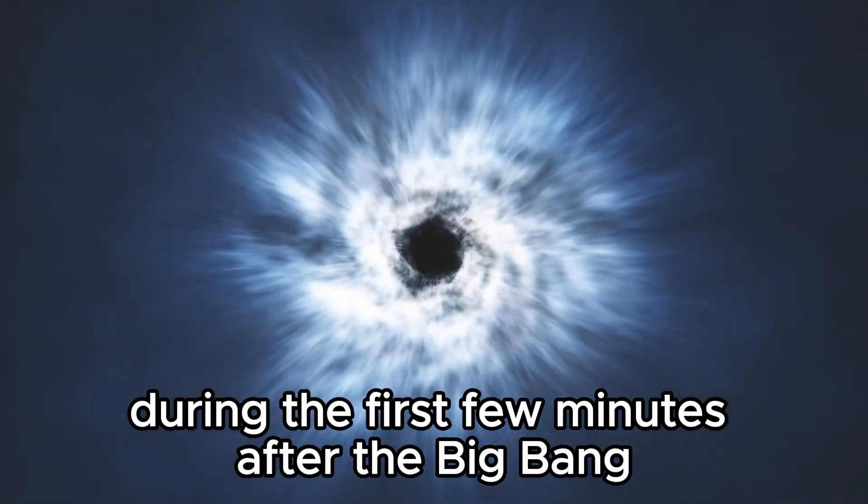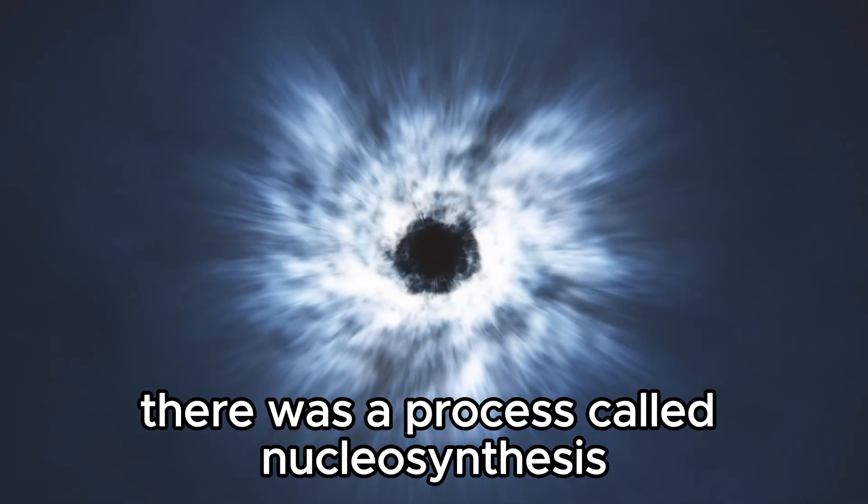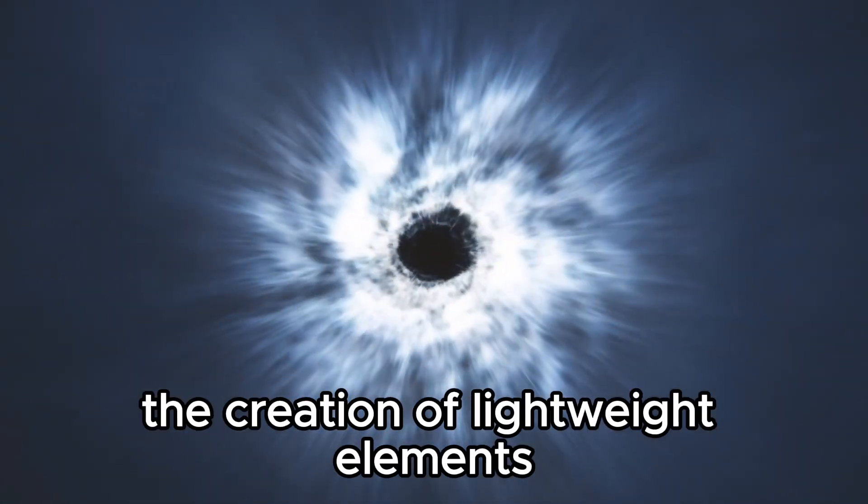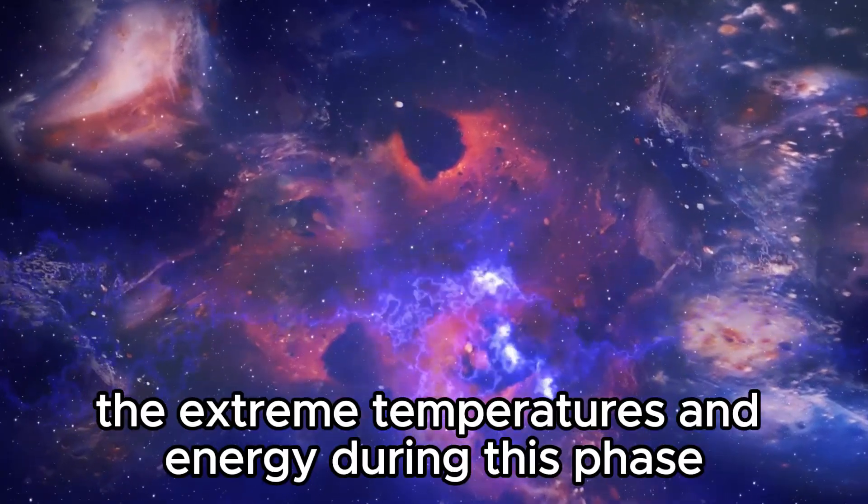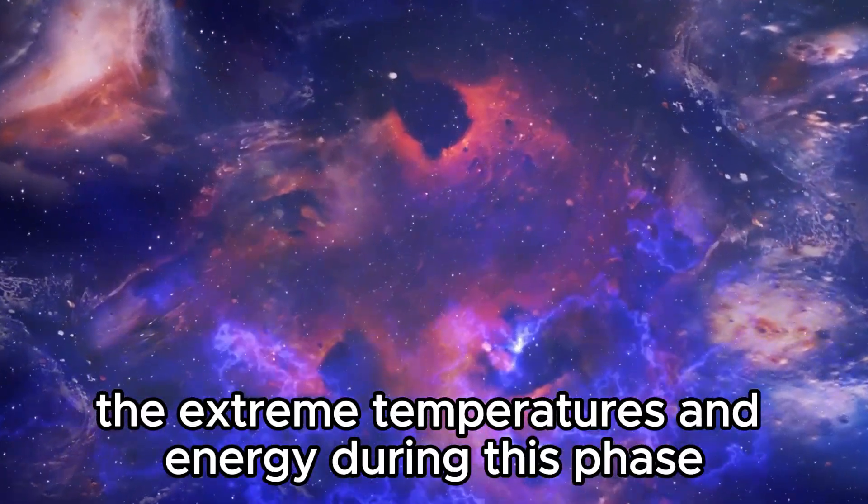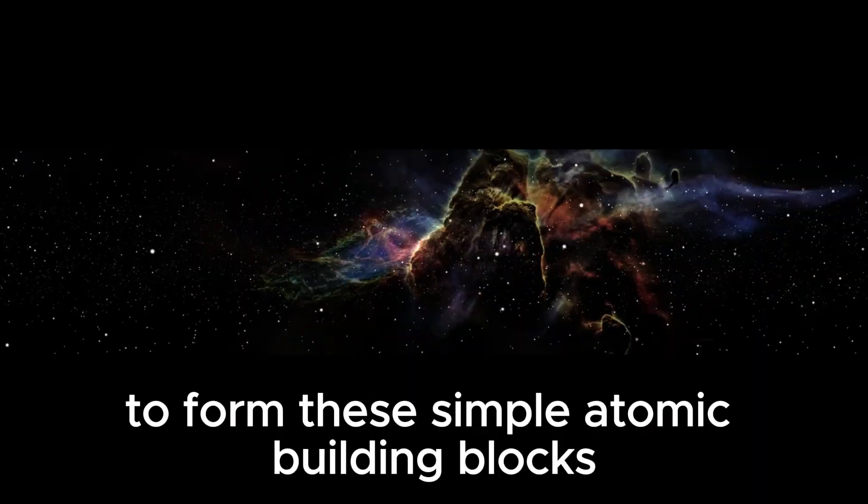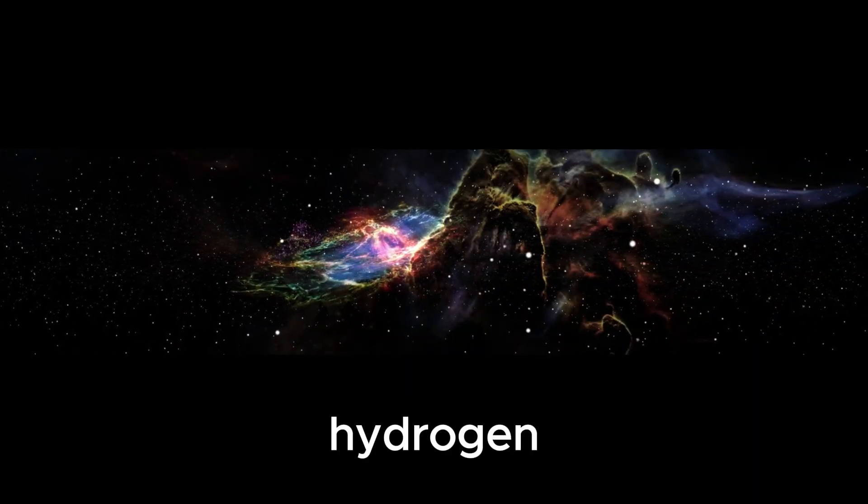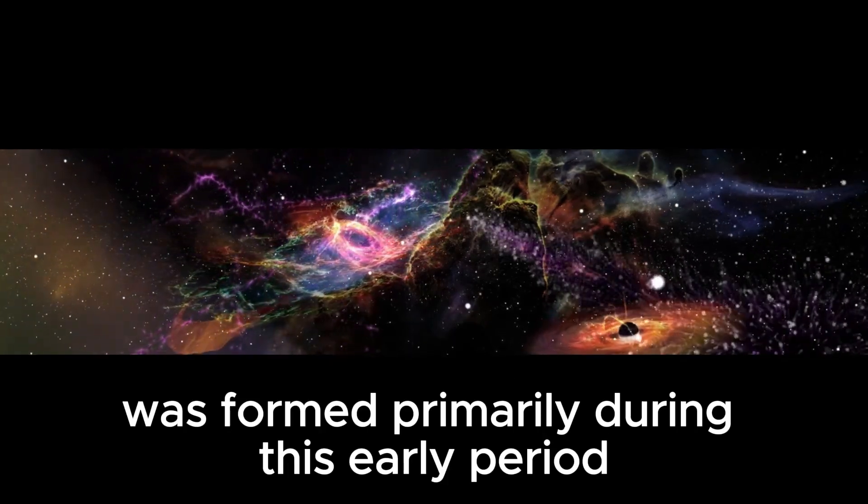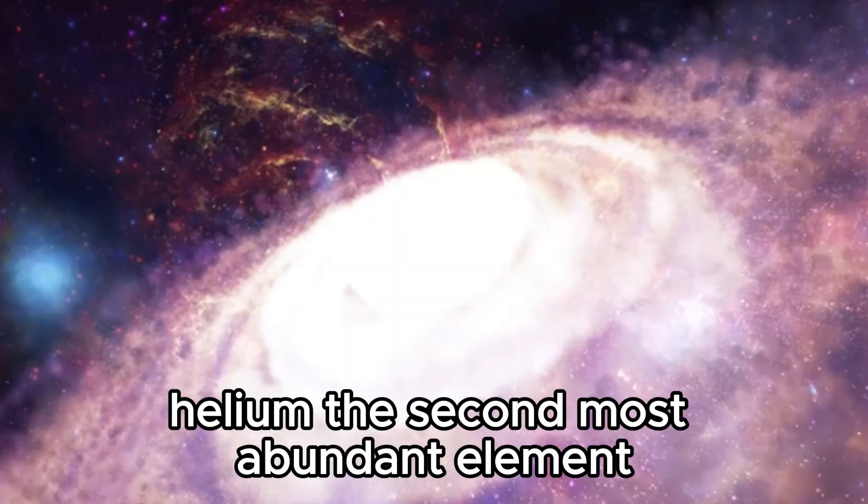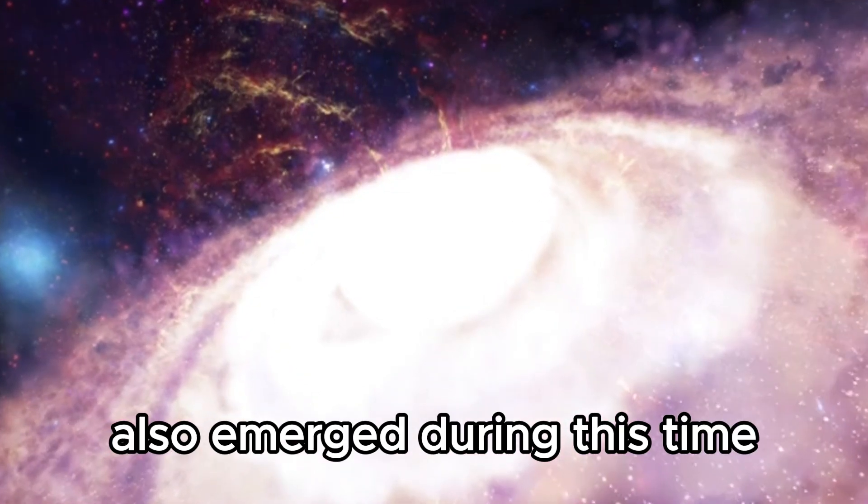During the first few minutes after the Big Bang, there was a process called nucleosynthesis. This process involved the creation of lightweight elements like hydrogen and helium. The extreme temperatures and energy during this phase allowed for the fusion of protons and neutrons to form these simple atomic building blocks. Hydrogen, the simplest and most abundant element in the universe, was formed primarily during this early period. Helium, the second most abundant element, also emerged during this time.